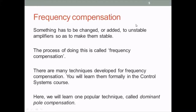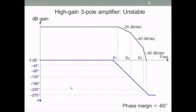Something has to be changed or added to an unstable amplifier to make it stable. Whatever that process or method is called frequency compensation. There are probably three dozen techniques in the literature on how to compensate an amplifier. Here we'll learn one technique which is very popular in amplifier design and a large number of commercial op-amps use — it's called dominant pole compensation.